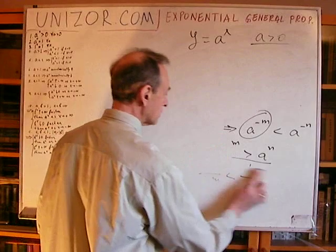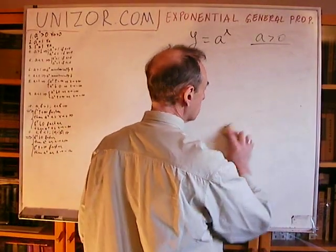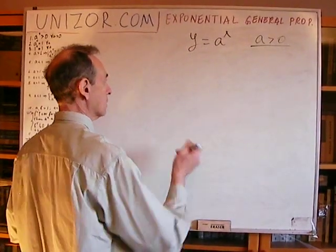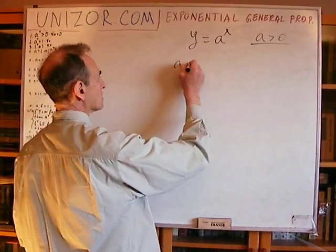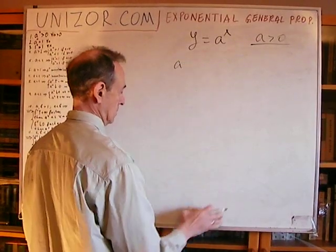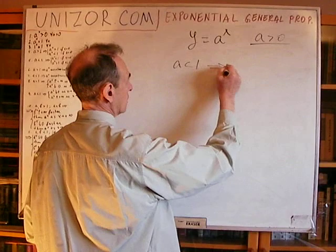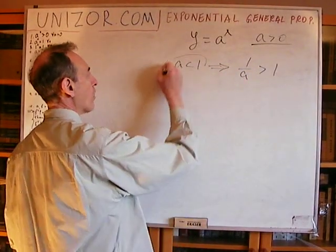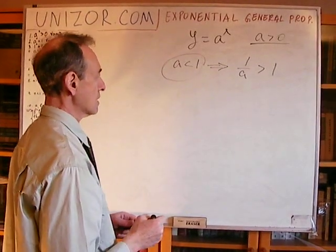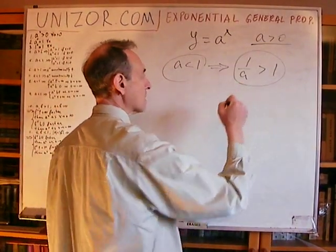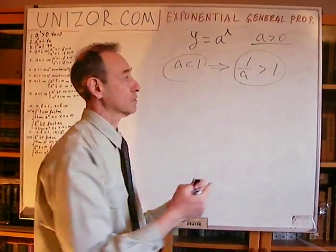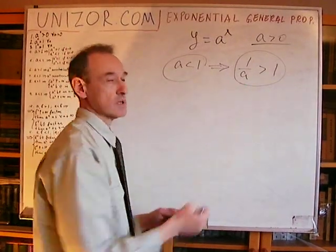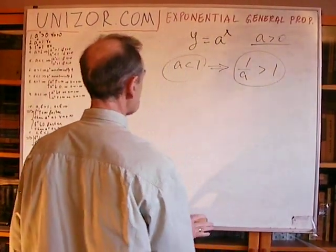The case with a less than one I will not consider at all, because it's quite obvious from the fact that if a is less than one, then one over a is greater than one. So all the properties of the a-less-than-one case follow from the a-greater-than-one case by reversing the sign of the exponent.